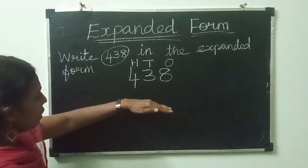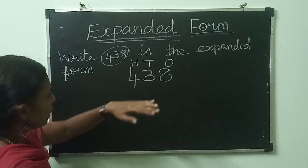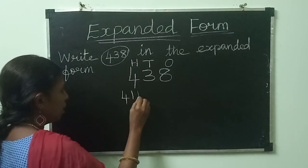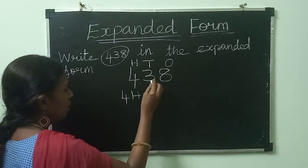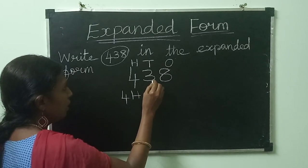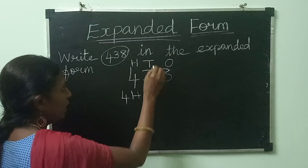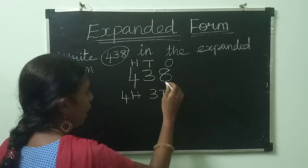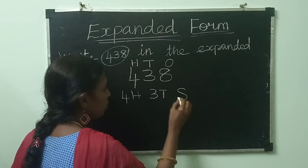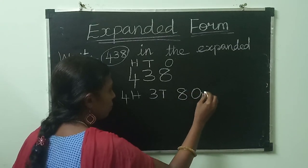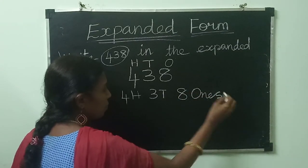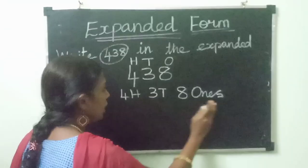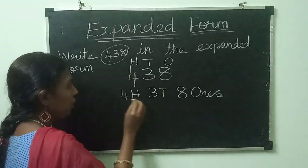Now see this given number. We have 4 hundreds. Then see the next digit — we have 3 tens. And 8 ones also. Now see this step: we have 400.